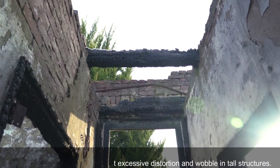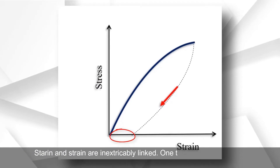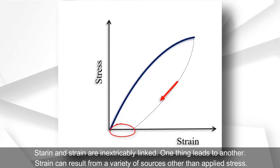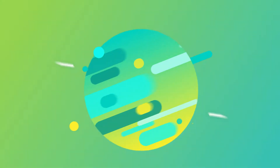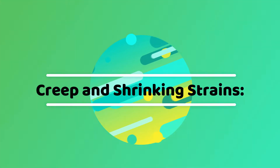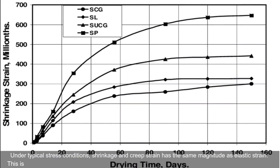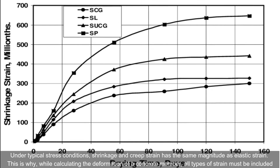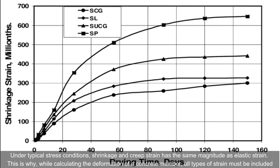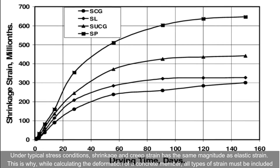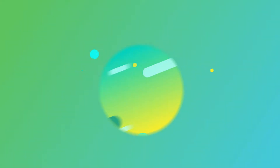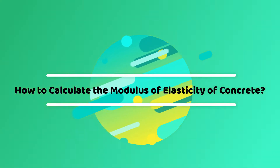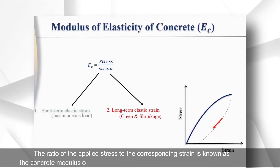In recent years, design regulations have mandated concrete to have a minimum modulus of elasticity to prevent excessive distortion and wobble in tall structures. Strain can result from a variety of sources other than applied stress, including creep and shrinkage. Under typical stress conditions, shrinkage and creep strain have the same magnitude as elastic strain, so all types of strain must be included when calculating the deformation of a concrete member.